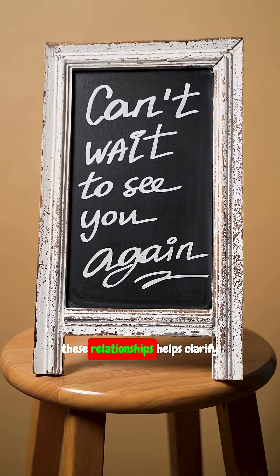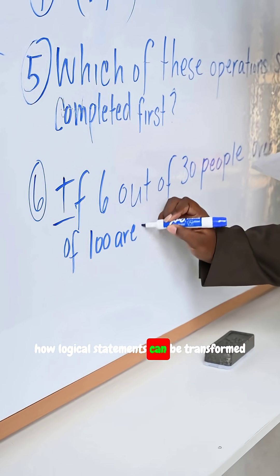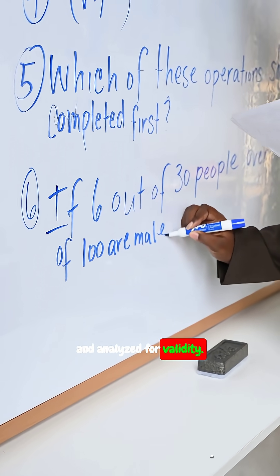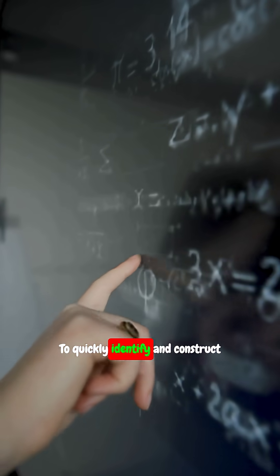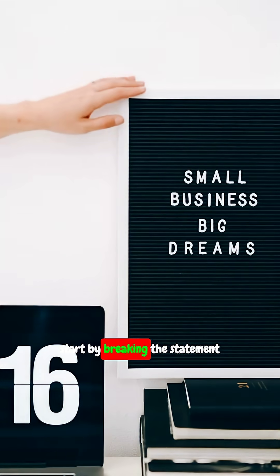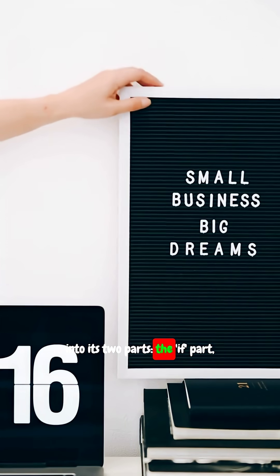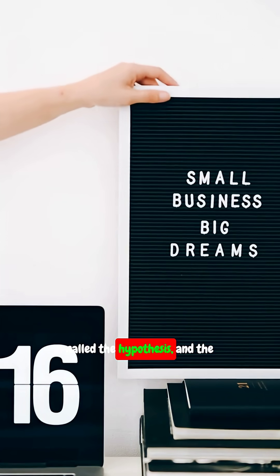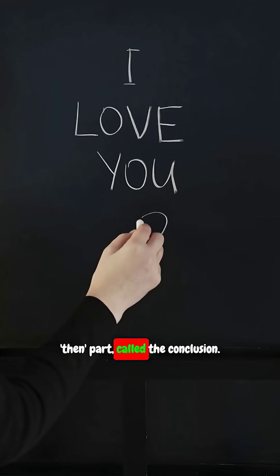Understanding these relationships helps clarify how logical statements can be transformed and analysed for validity. To quickly identify and construct the converse, inverse, and contrapositive of any conditional statement, start by breaking the statement into its two parts: the if part, called the hypothesis, and the then part, called the conclusion.